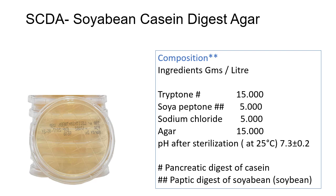Next is SCDA, which stands for Soybean Casein Digest Agar. The composition includes tryptone, soya peptone, sodium chloride, and agar. Tryptone is the pancreatic digest of casein, and soya peptone is the peptic digest of soybean.